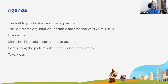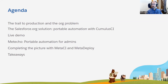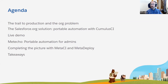I want to start today by laying out some of our conceptual framework. I'll talk about the trail to production and what I call the org problem, which is a problem that many practitioners of lifecycle management, continuous integration, and other allied disciplines on the platform confront. We'll go through the Salesforce.org solution to the org problem, which we call portable automation using the Cumulus CI toolchain. I'll do a demo of Cumulus CI, talk about MetaCo, MetaCI, and MetaDeploy.